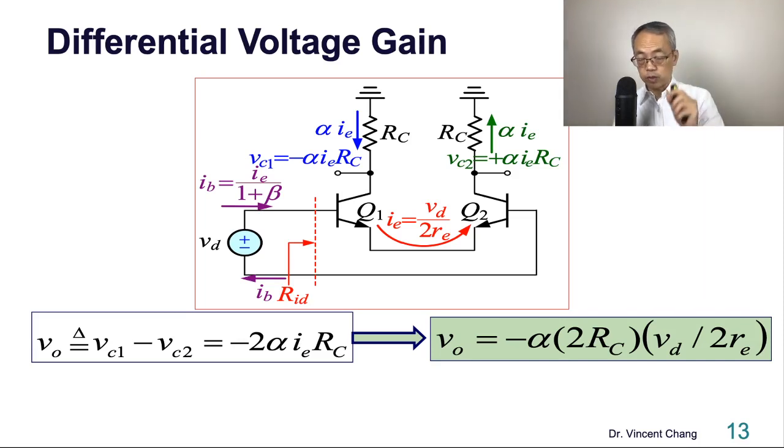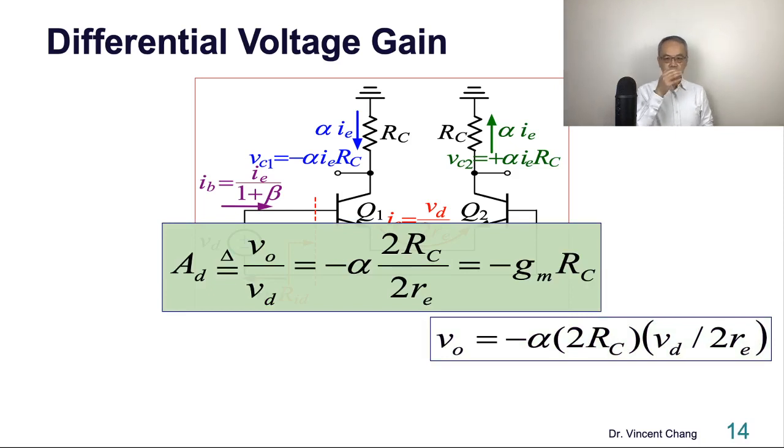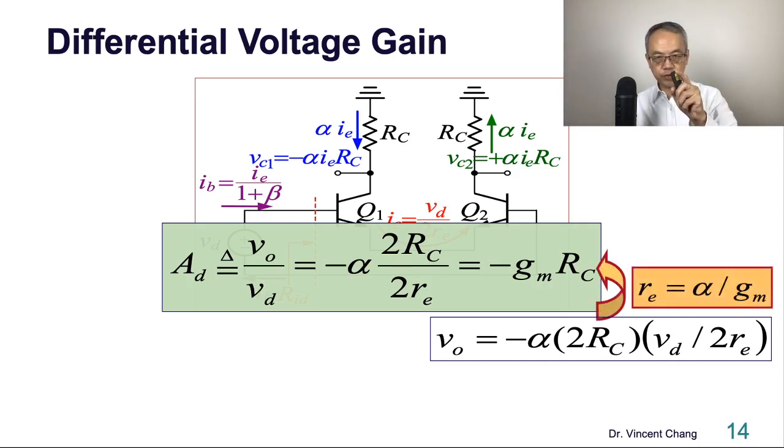Then we have the differential output, then differential input. So now it's the differential voltage gain. If you are struggling to put this relationship together, then you might need to write down the relationship between RE and the transconductance. The RE equals alpha divided by the transconductance. So this is very simple and beautiful result. Also super easy.